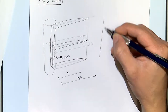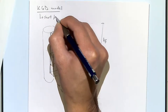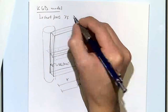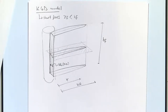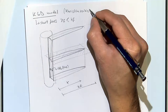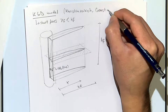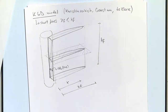Here x is the fracture half-length, and we have a constant fracture height. This KGD model is usually good for relatively short fractures — meaning the fracture length is smaller than the fracture height. Because it's applicable to short fractures, it's mostly used for analysis of leak-off tests or frac-pack completions, where fractures are relatively short. The KGD model is named after Khristianovic, Geertsma, and De Klerk.